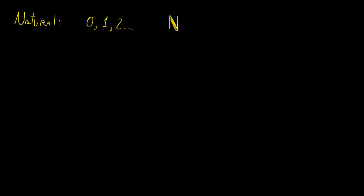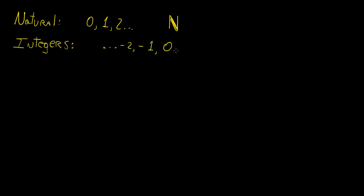Now if we want to actually include negative numbers, then we need to make use of the integers. The integers are an extension of the natural numbers that include all the negative numbers as well. So you could start from minus infinity, and then go minus 2, minus 1, and then start at 0 again, and go all the way to the positive numbers: 1, 2, 3, and so on.